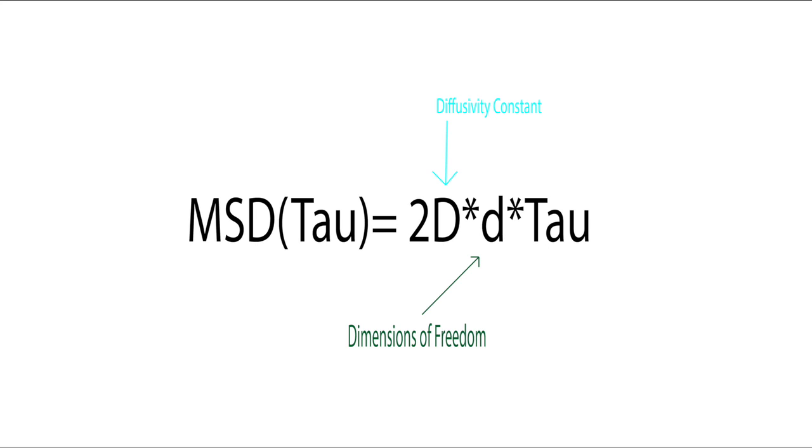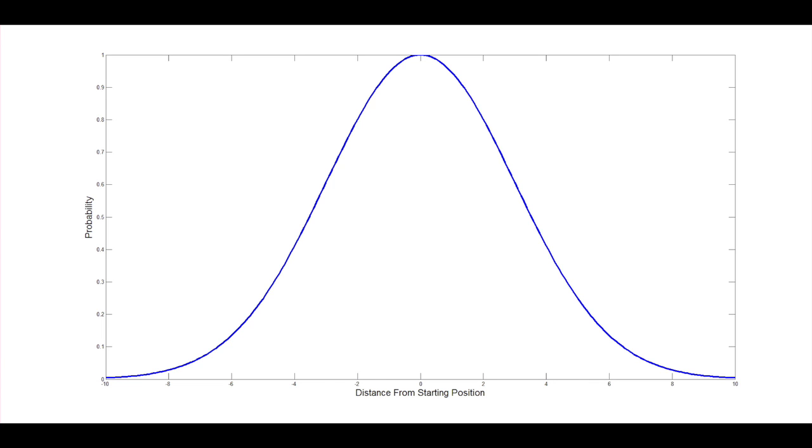And it can be a maximum of three for x, y, and z. Tau is the time value we are using for the MSD. So, now that we have the diffusivity constant, we can get a Gaussian. The width at the Gaussian at half of its peak value will be equal to this equation, where t is the time that we are looking at the particle since the start.